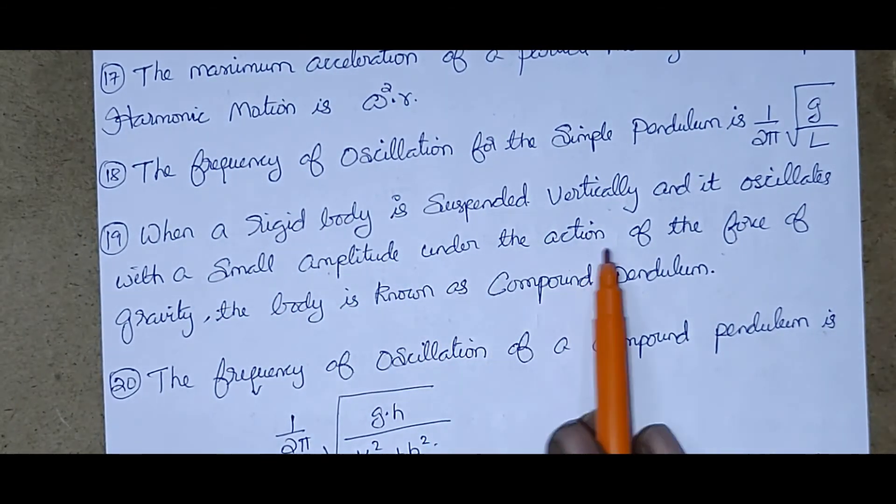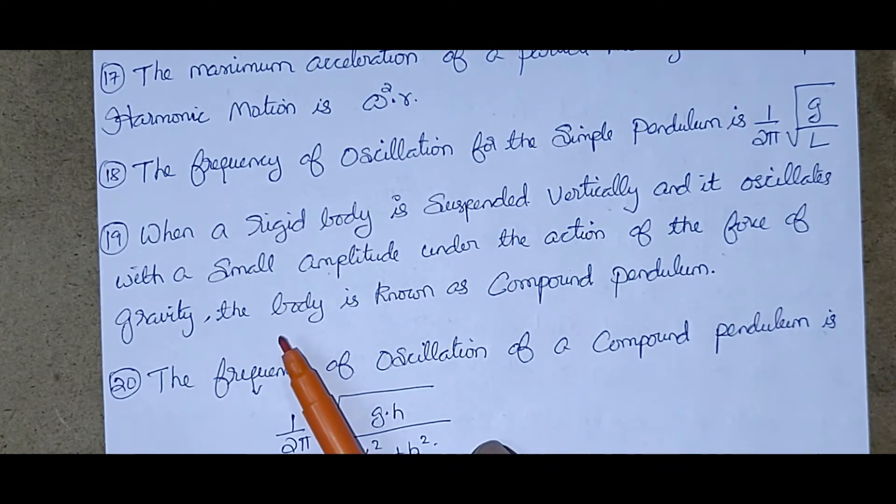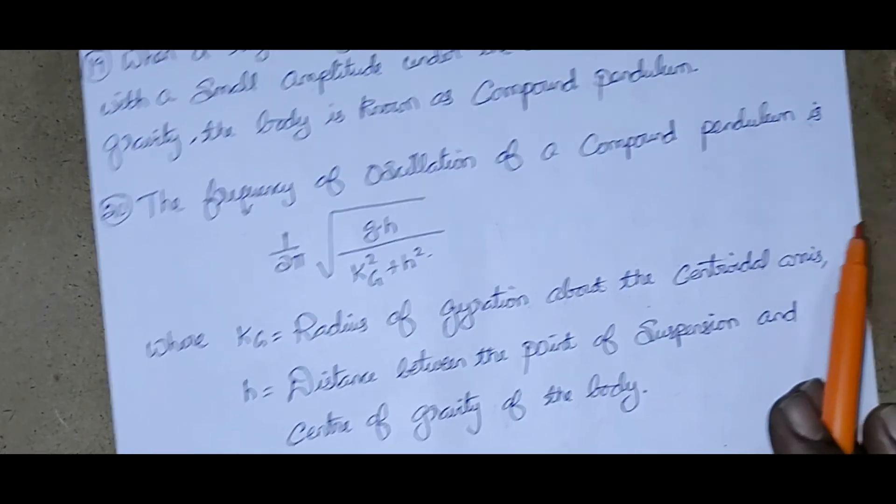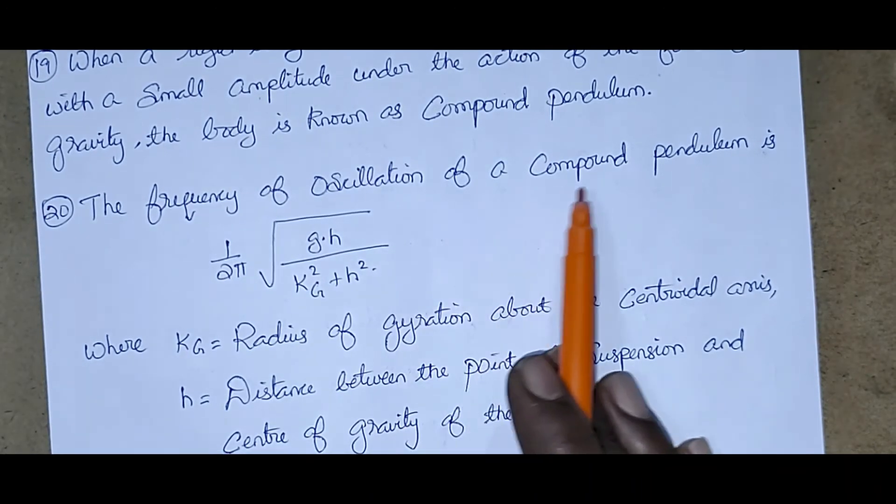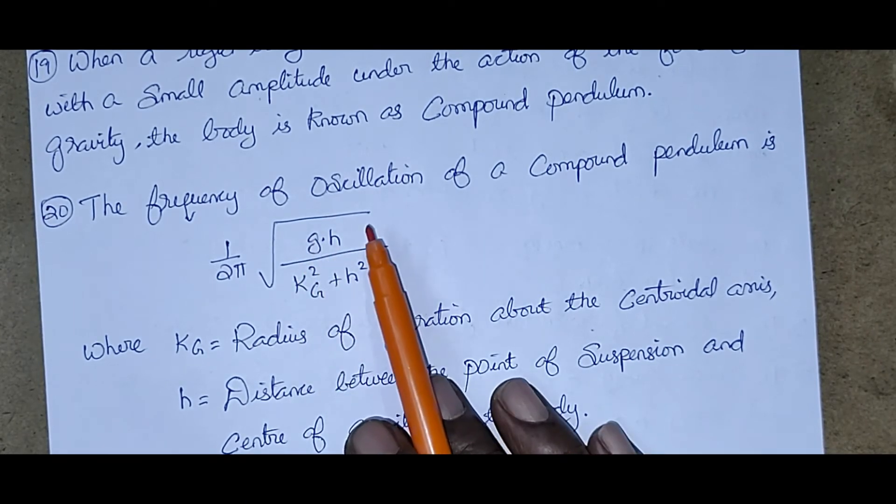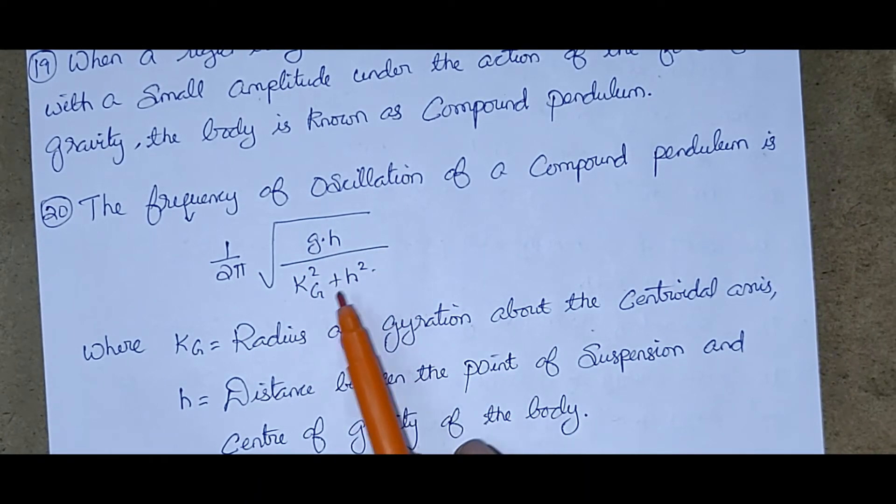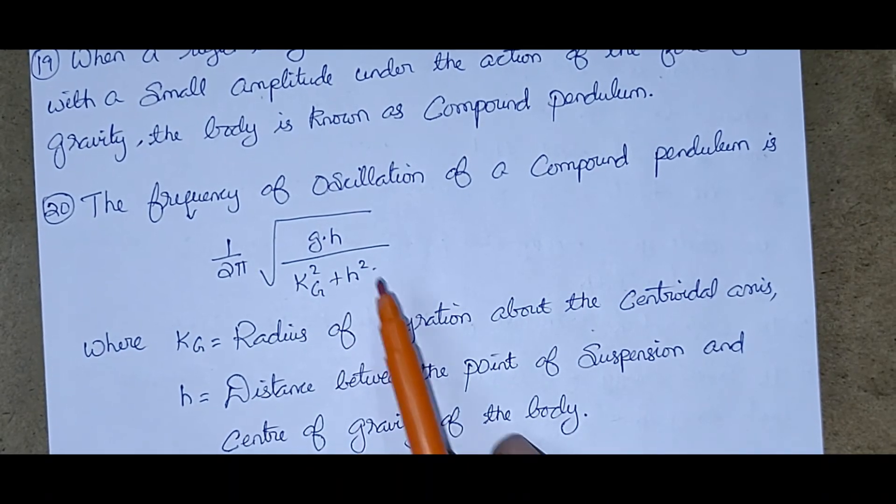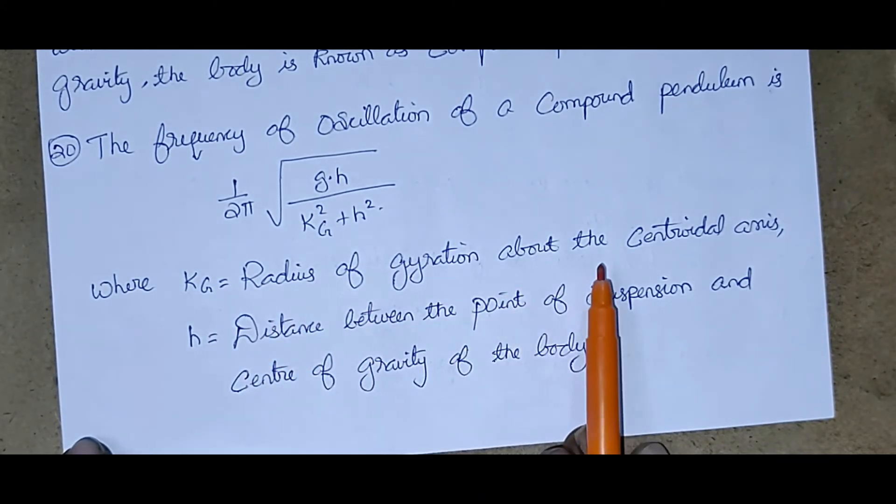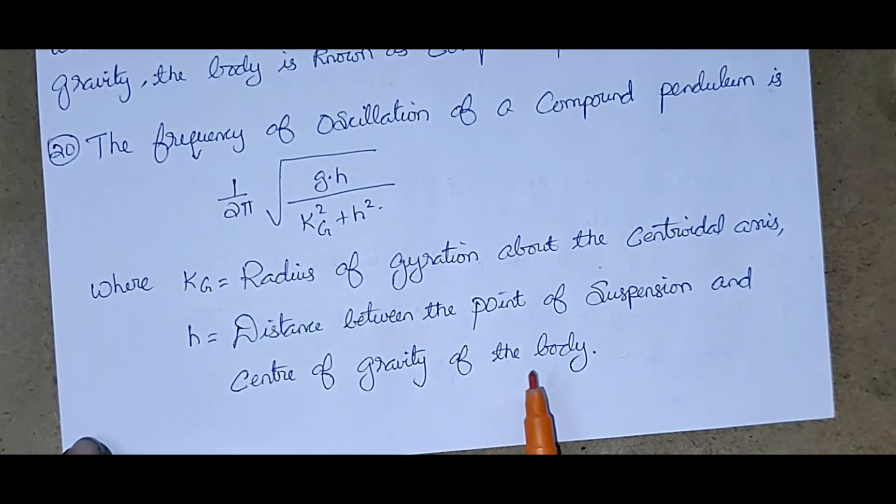The frequency of oscillation of a compound pendulum is 1 by 2π under root G into H by Kg square plus H square, where Kg is radius of gyration above the centroidal axis, H is distance between the point of suspension and center of gravity of the body. Okay friends, so that's all. Thanks for today's class. I think this material will be definitely helpful for your Assistant Engineering examination.